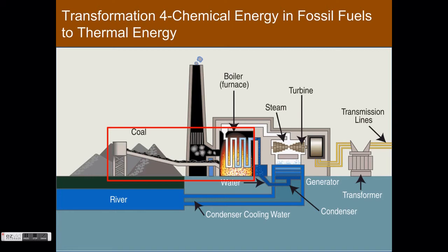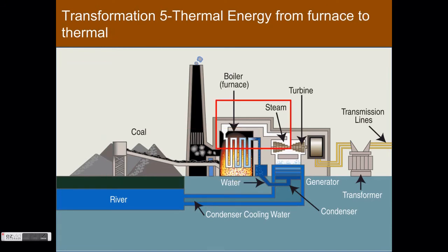Now we're talking present day. You may want to stop and pause the video to take a look at this graphic. In the fifth transformation, the thermal energy that came from the burned coal transfers from the furnace into a water supply. This water gets heated up and turns into steam, which starts pushing through a small pipe, and you can see this right here in the diagram highlighted in the red box.